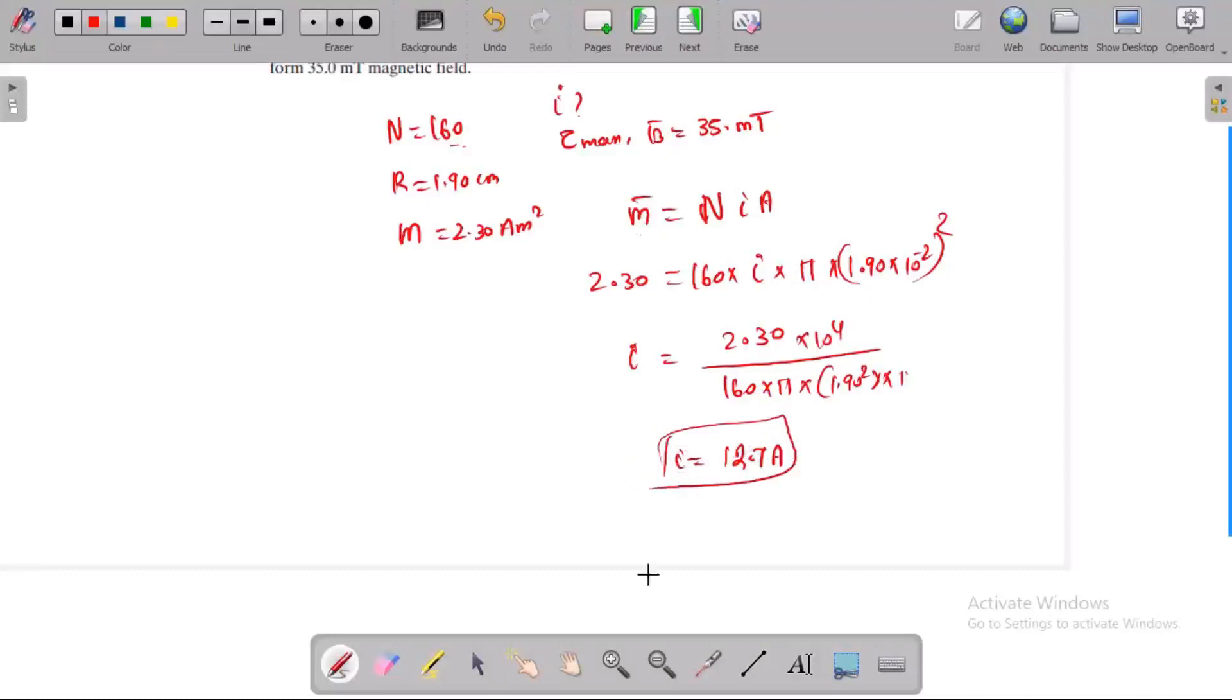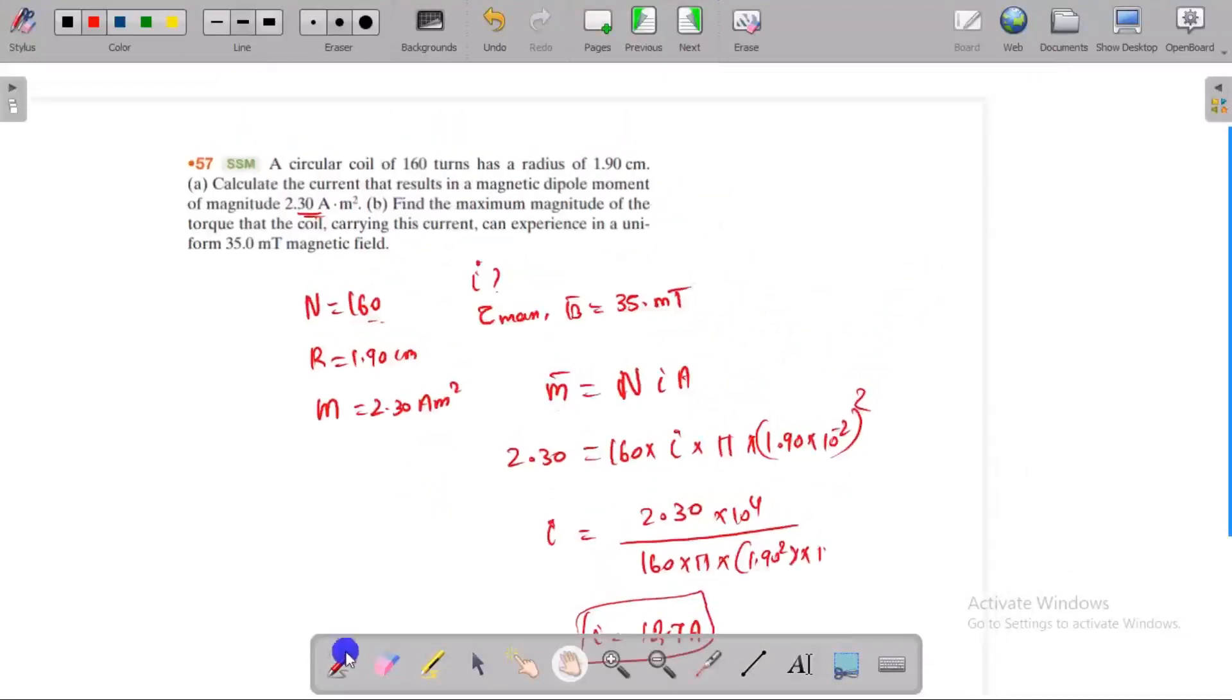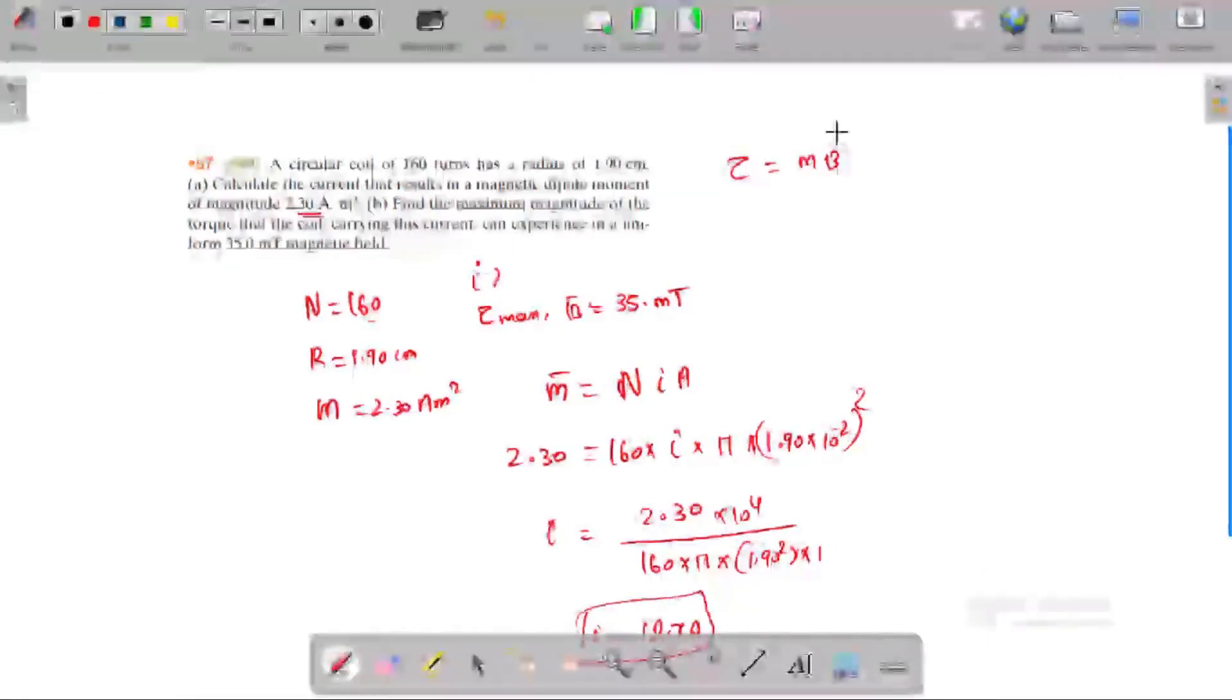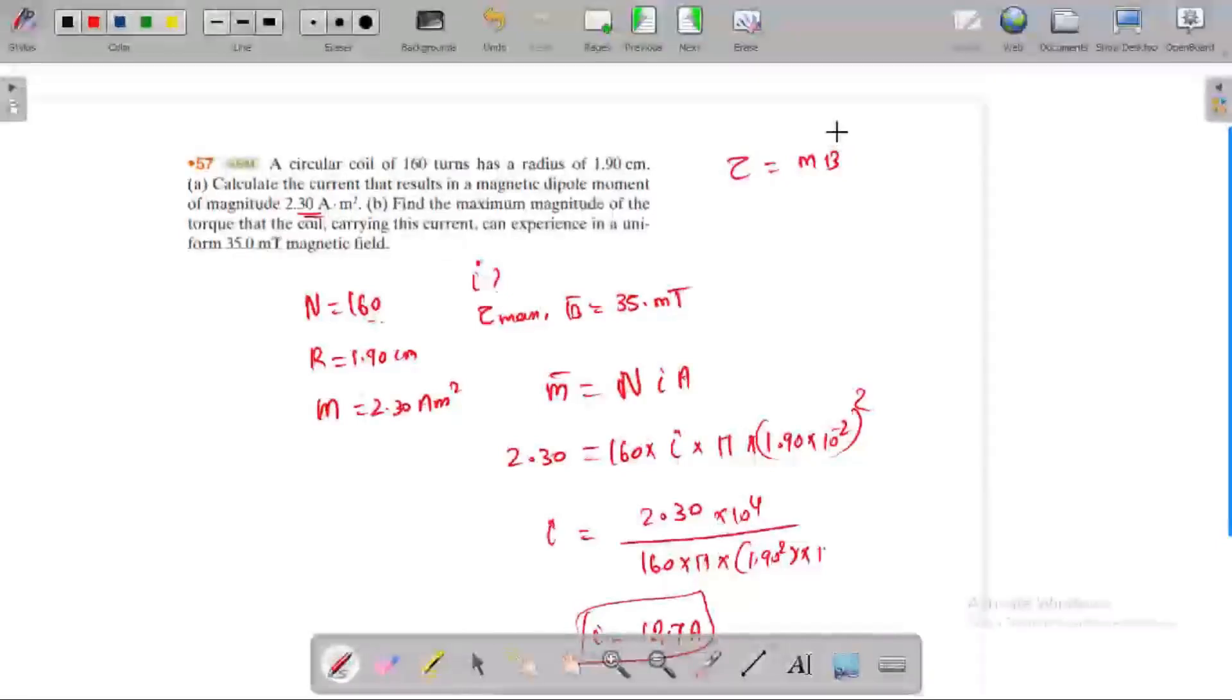Next we need to find the torque. Torque is equal to m times B times sine theta. At 90 degrees we get the maximum torque. When theta is zero, work is zero because it's a cross product. So now we assume 90 degrees.